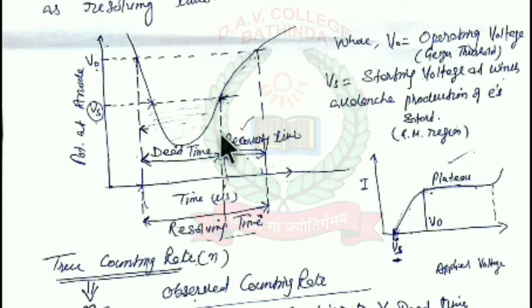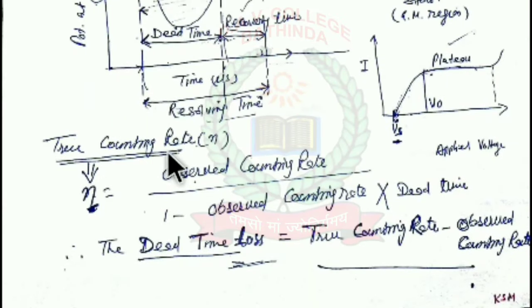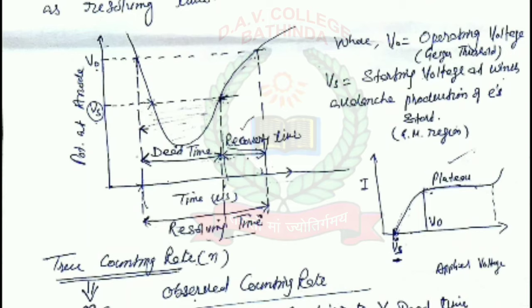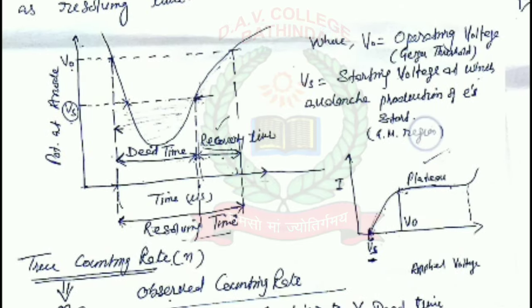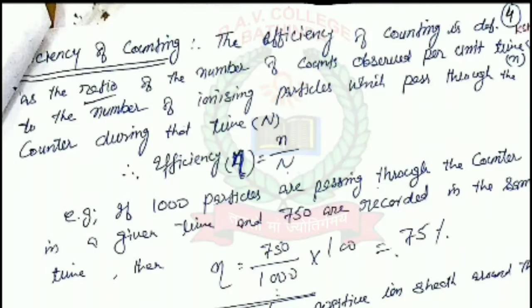The true counting rate can be calculated as: True counting rate = Observed counting rate / (1 − Observed counting rate × Dead time). Dead time loss refers to the number of charged particles that crossed the GM tube without being detected, and equals: True counting rate − Observed counting rate. The counting efficiency is defined as the ratio of the number of counts observed per unit time to the number of ionizing particles passing through the counter during that time, and percentage efficiency is obtained by multiplying this ratio by 100.